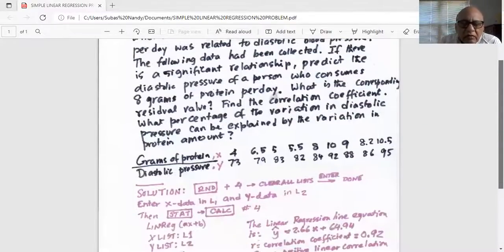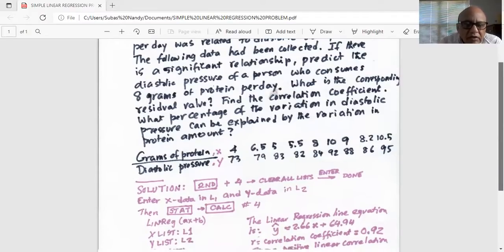So we have data on grams of protein, which is X, and we have diastolic pressure data, which is Y. So we have to enter X and Y data in L1 and L2 of the calculator.